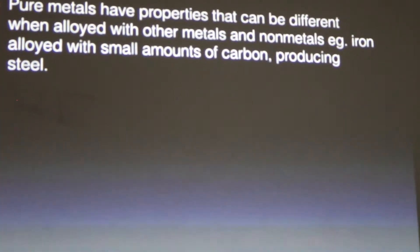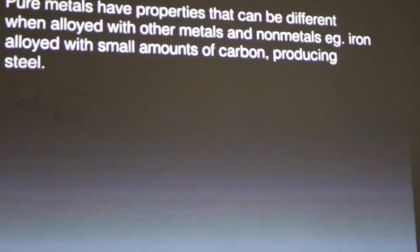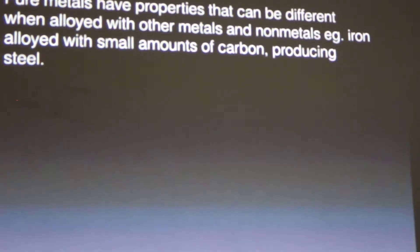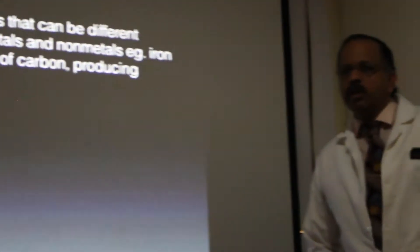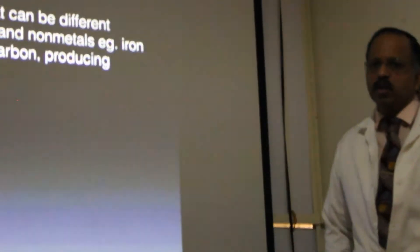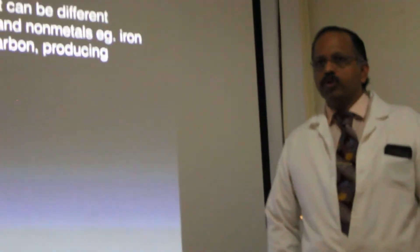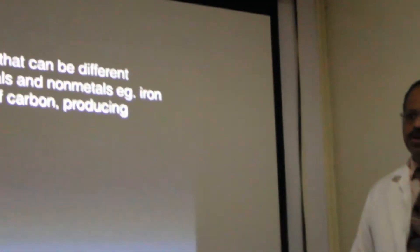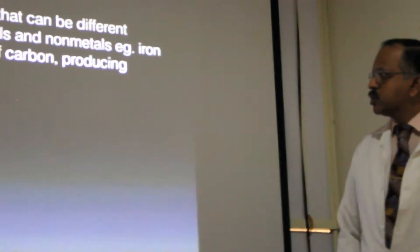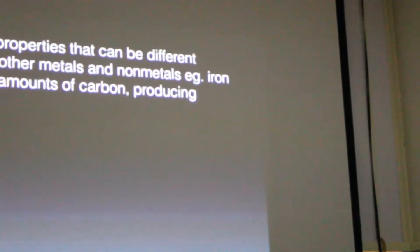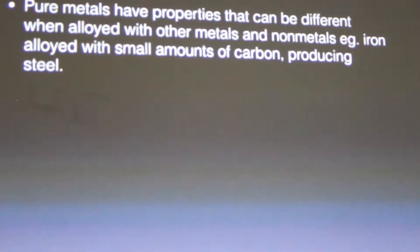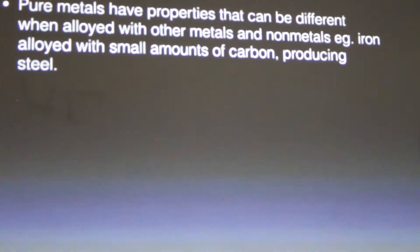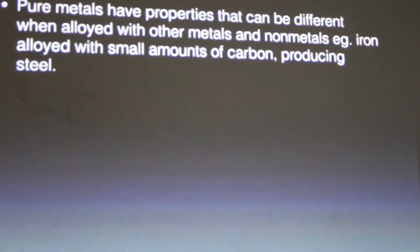Pure metals have some properties that can be limiting, so there are drawbacks when you use pure metals. Metals are alloyed with other metals so that we can obtain beneficial properties. For example, iron is alloyed with small amounts of carbon to produce steel, which is an alloy of iron and carbon.